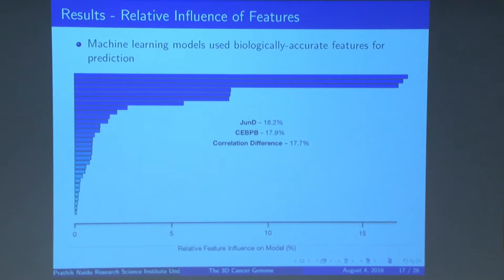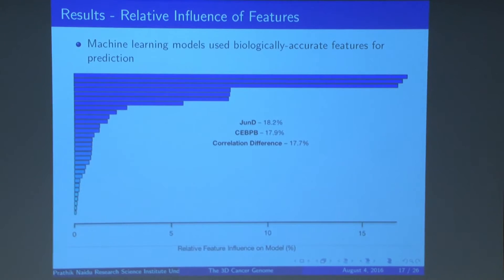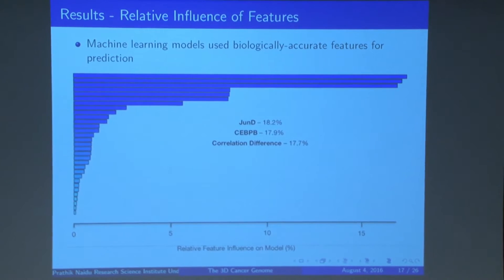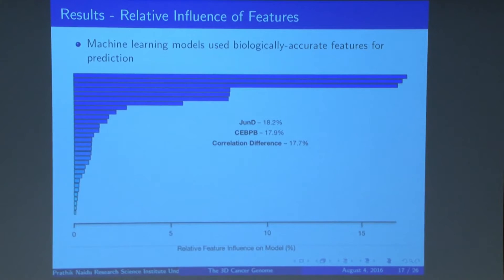We wanted to furthermore justify exactly how our machine learning algorithm is predicting these loop structures. We did a feature selection to determine which features contributed the most to predictability. What we found was that JunD and CEBPB, two transcription factors inputted into our data set, conferred the most predictive ability for these loops. This is interesting because JunD and CEBPB are two factors known to play a role in CTCF loop formation. Without actually inputting this prior knowledge, the models themselves were able to prioritize the factors that are biologically accurate and matter most to loop prediction, suggesting a good prediction framework.